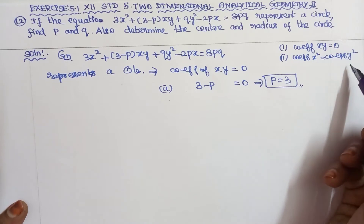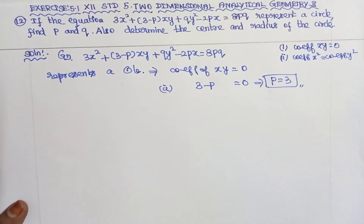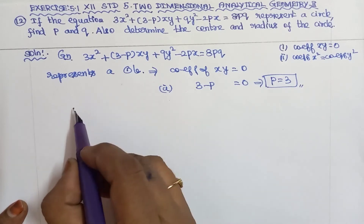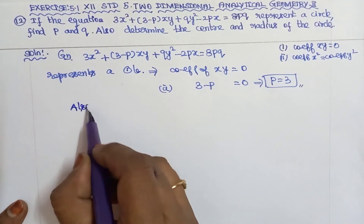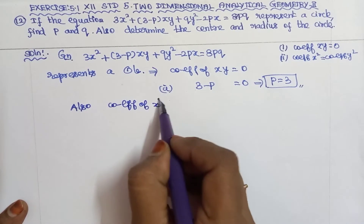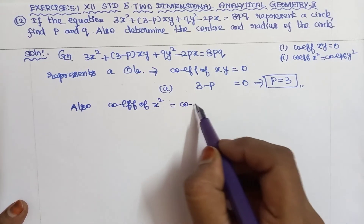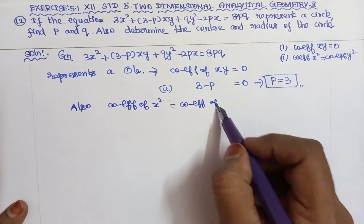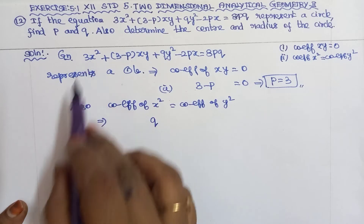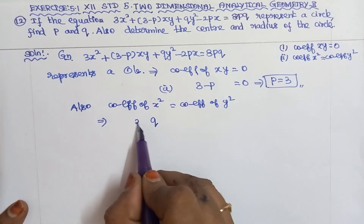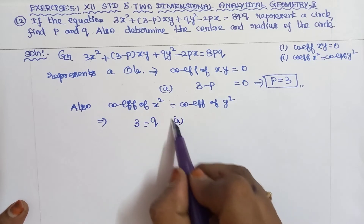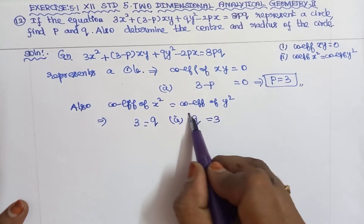The second condition is that the coefficient of x² must equal the coefficient of y². The coefficient of x² is 3 and the coefficient of y² is q. Therefore q = 3.